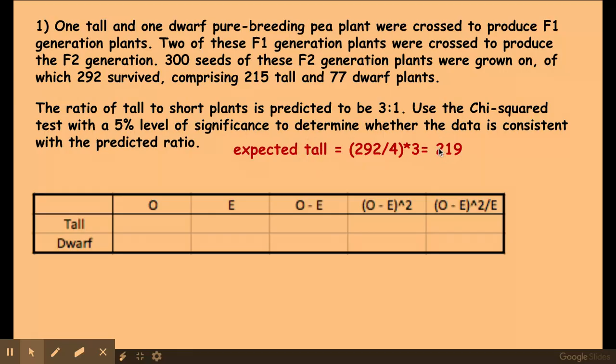So that gives me 219. And then the expected ratio, very similar. I've got my total number of observed individuals divided by 4, and then I times it by 1 which is 73. So these are my expected values. So there's my ratio 3 to 1. That's how it's being used.